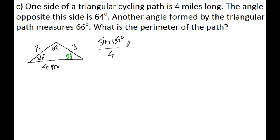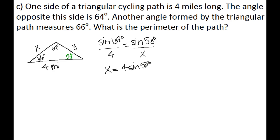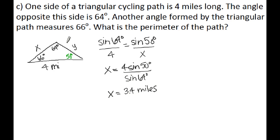Setting up the ratio: sine of 64 over 4 equals sine of 50 over X. Cross-multiplying and solving gives X equals 4 times sine of 50 divided by sine of 64. Plugging into the calculator, 4 sine of 50 divided by sine of 64 equals 3.4 miles.